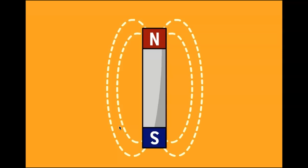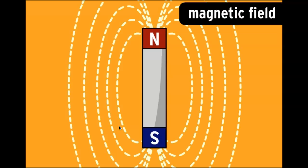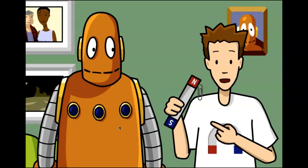A magnet is any material that produces a magnetic field. Yeah, a magnetic field is basically a force field. It's an invisible area of force that extends all around a magnet.